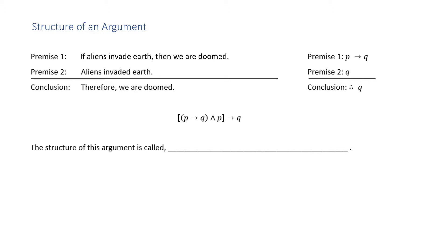The structure of a formal argument. A formal argument consists of three parts: premise one, premise two, and a conclusion. Let's look at an example. Premise one: if aliens invade the earth, then we are doomed. Symbolically, that's an if-then statement. If P is 'aliens invade the earth' and Q is 'we are doomed,' then symbolically it would be P → Q.